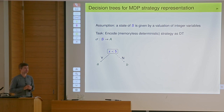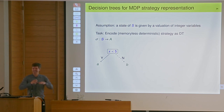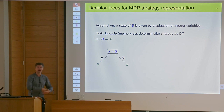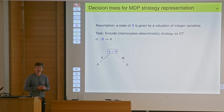So how do I use decision trees to represent strategies? I assume that my state space has roughly the following structure: it's a bunch of variables, and for simplicity I will only consider integer variables and Boolean variables. A state is given by a valuation of integer variables or Boolean variables.